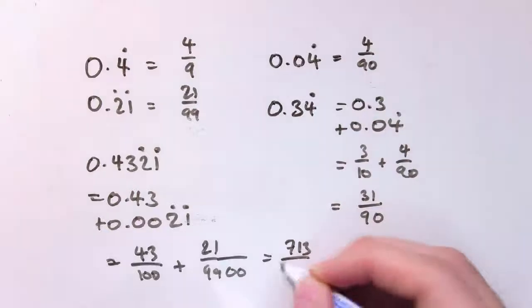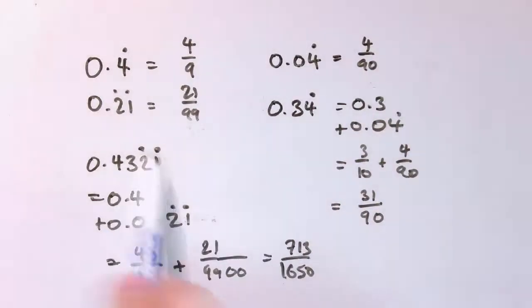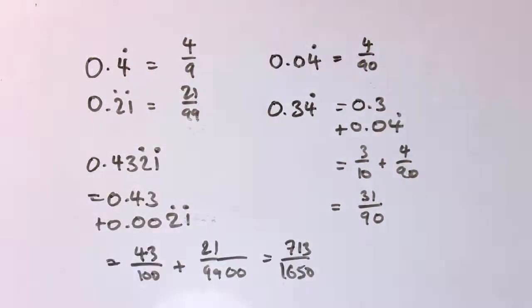That first method will always work here as well. You could have times it by 100, subtracted one from the other, and done the method as before. For real experts, this is another good way of looking at it. If you can understand this way of doing it as well, you've got two methods and you're really understanding what's going on, which is great. If you're doing this for GCSE exams and you just want a method, I'd stick to that first one. This is great for some extra fluency.